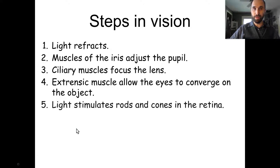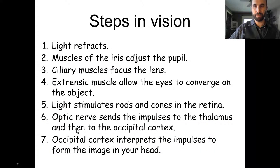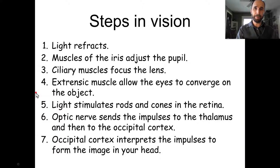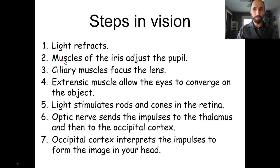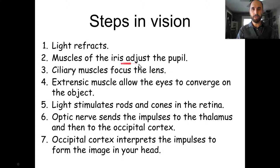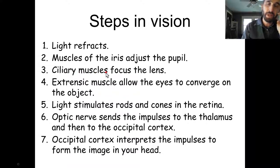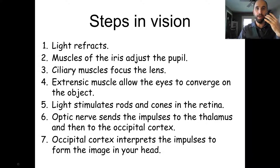To put all the steps in vision together — a lot of this is happening simultaneously. First, light hits your eyeball and is refracted. At the same time, the muscles of the iris adjust pupil size for the amount of light coming in — constricting if there's too much, dilating if there's not enough. The ciliary muscles focus the lens so the image projects onto the retina.